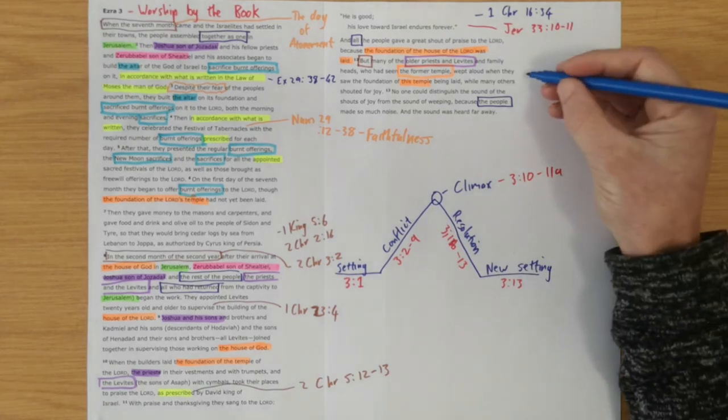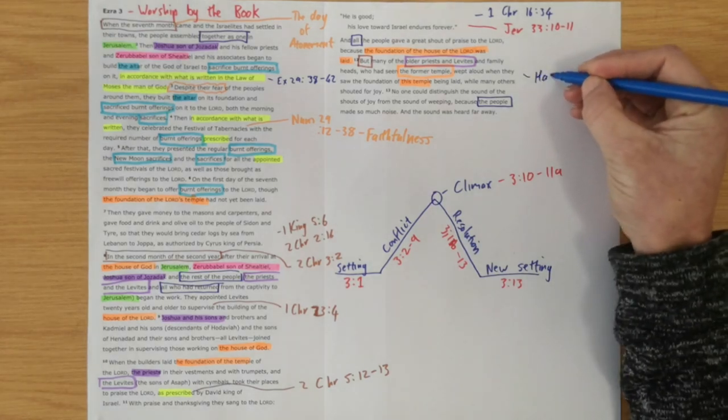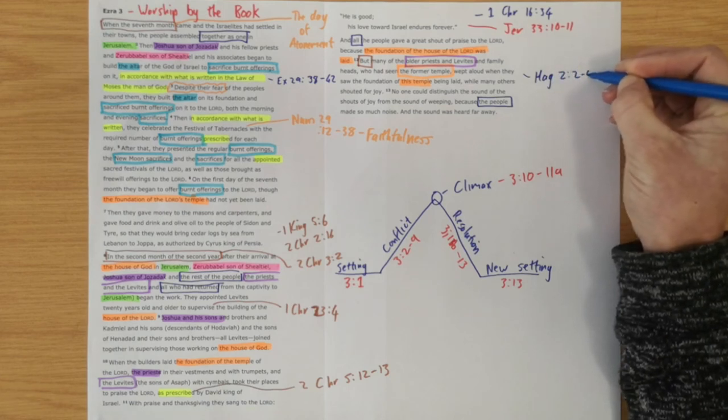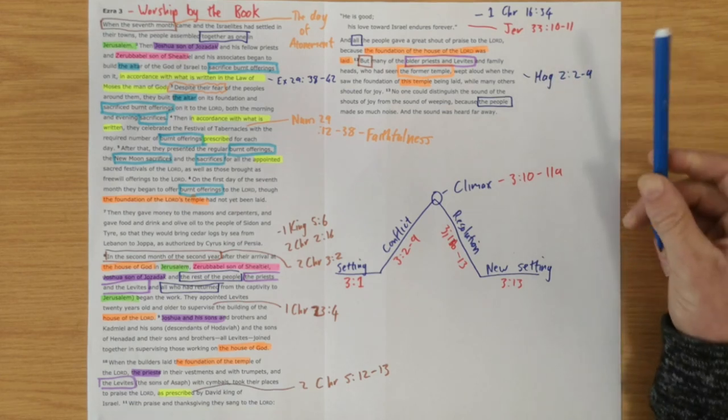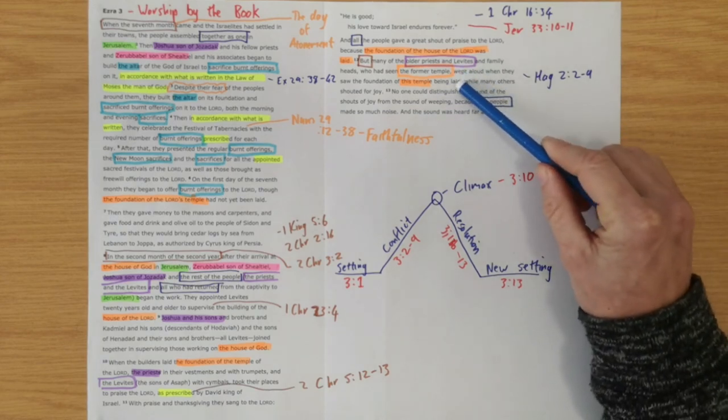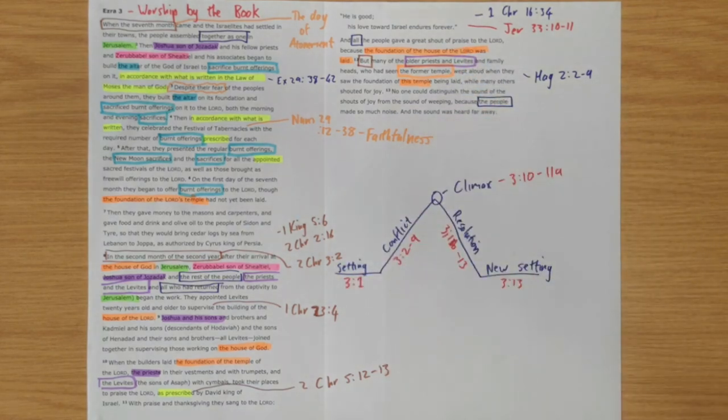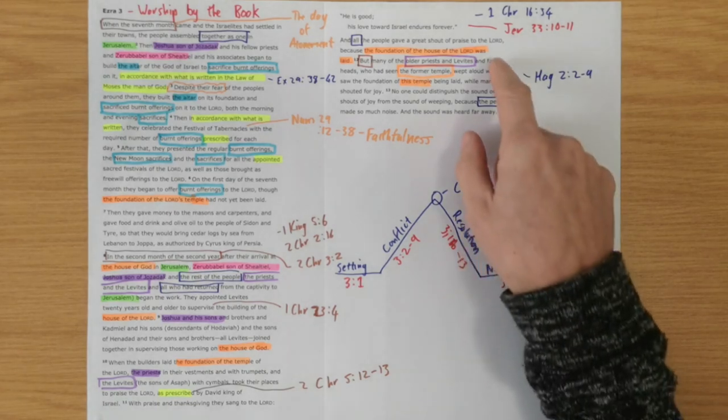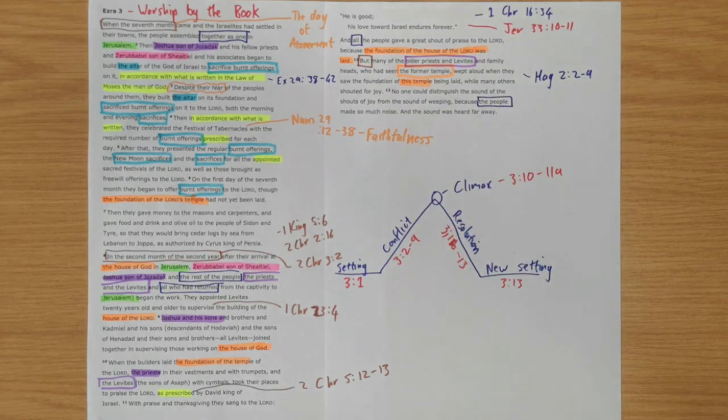Now later on we'll hear about Haggai the prophet being with them encouraging them. If you want to go and read Haggai 2 verse 2 to 9, you'll see that Haggai said that the glory of this house will be greater than the glory of the former house. Now it's another illusion pointing us ahead to our Lord Jesus when John 1 verse 14 says and we have seen his glory. And when Jesus walked into the temple, then the glory of this house was greater than Solomon's house. But that is pointing ahead.